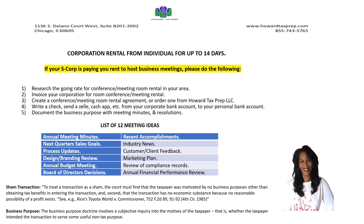Your sixth meeting covers board of directors decisions. This was really popular when the SBA loans were out — the EIDLs and the PPP loans. Even if you are the only director on the board, you still want to document any decisions. With the SBA loans, oftentimes you were documenting those decisions with a resolution — for example, the board resolves that we will take on $10,000 in debt from the SBA.